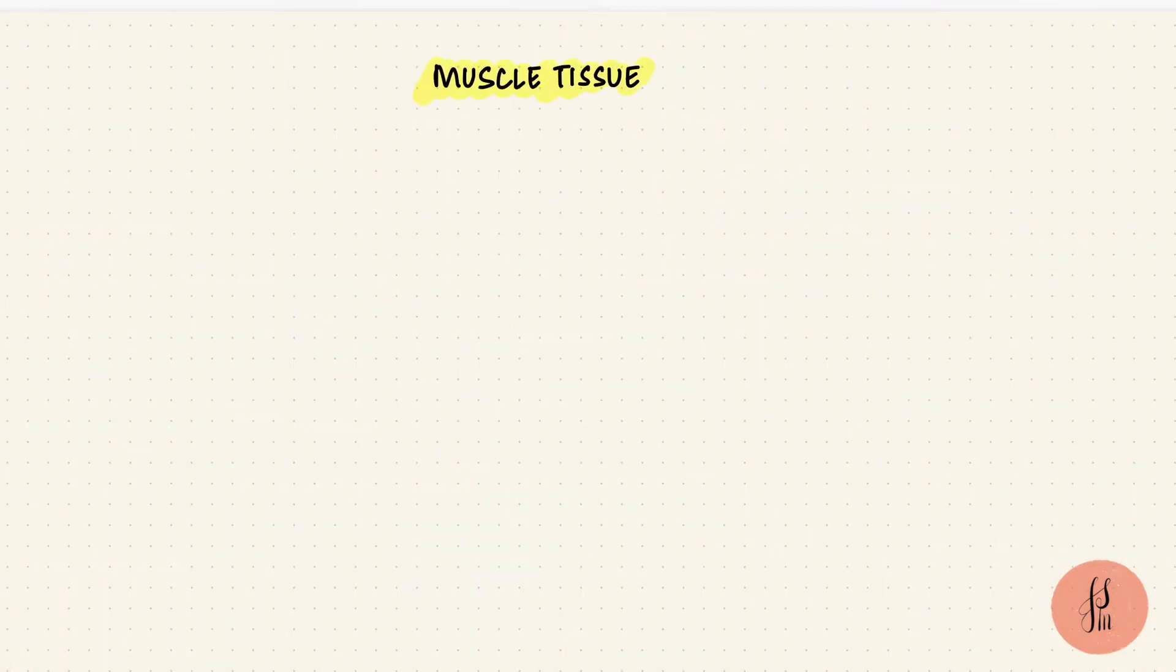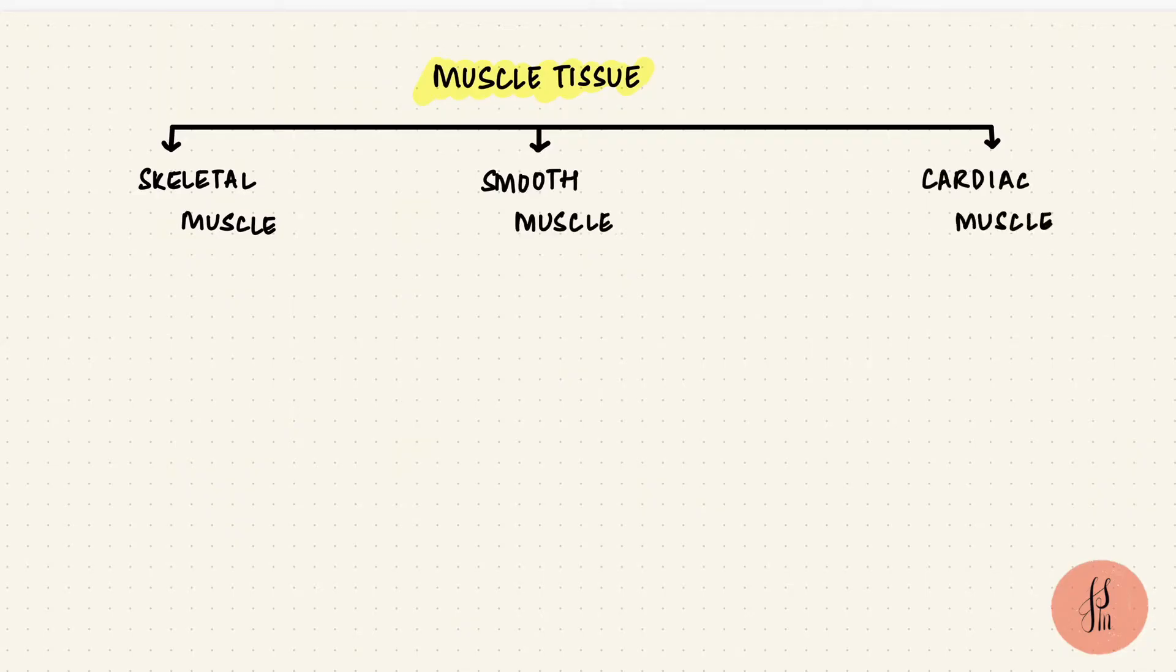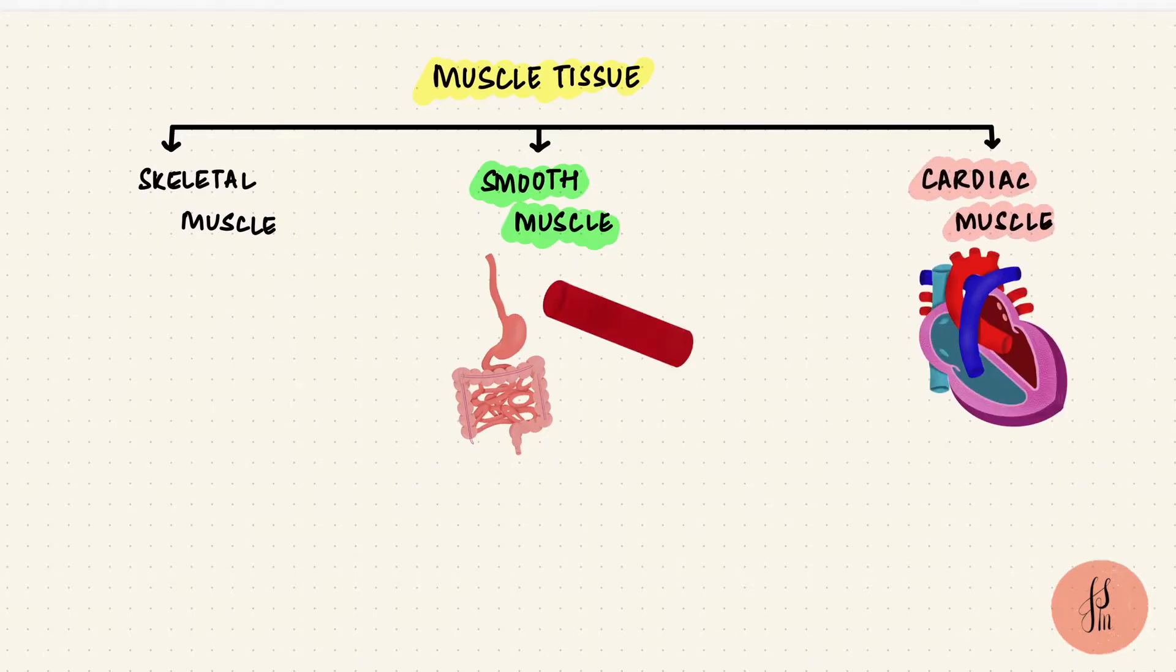Humans have three types of muscle tissue: skeletal, smooth, and cardiac muscles. Smooth muscles are in the walls of hollow viscera, like the digestive tract and blood vessels. Cardiac muscle is specific to the heart. But skeletal muscles are those that attach to the skeleton, to bones, like the biceps, triceps, quadriceps, and the hamstring muscles.